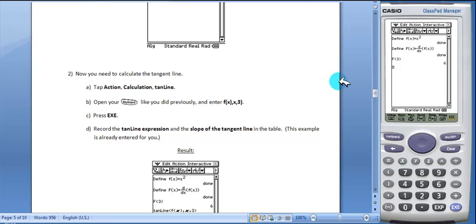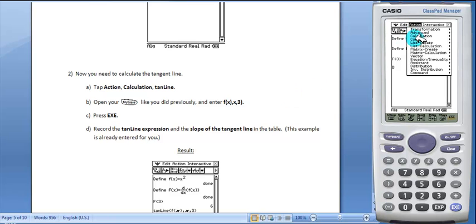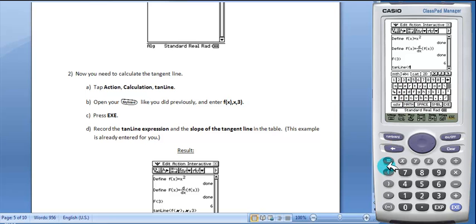Now we need to calculate the tangent line. So we'll tap ACTION, CALCULATION, TAN LINE. Open the keyboard and enter f of x, comma, x, comma, 3. Tap EXE. And there's our TAN LINE.